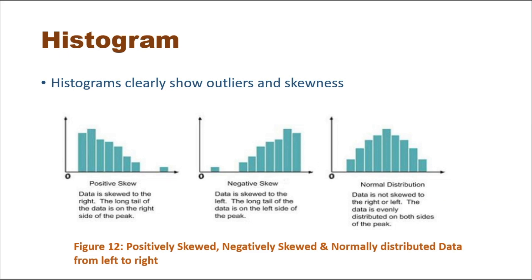Histograms are also used to identify the skewness of a dataset. If the histogram looks like a bell shape it represents a normal or near-normal distribution, while the other shapes indicate skewed distributions. This concept will be discussed in detail in the next video.